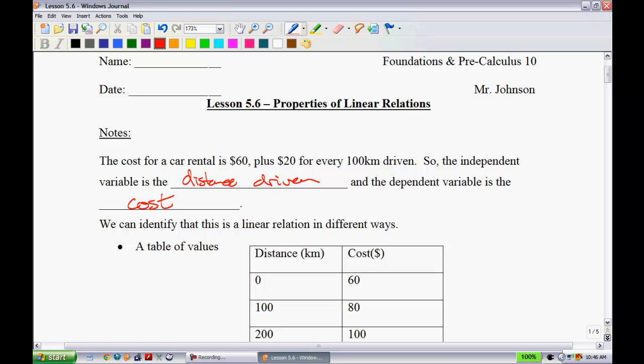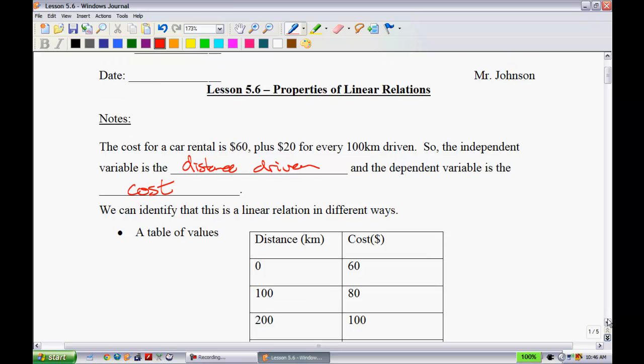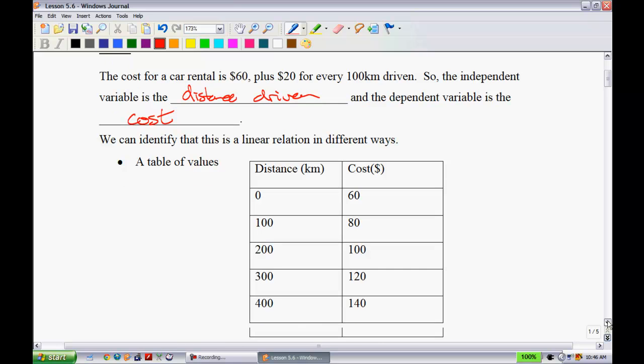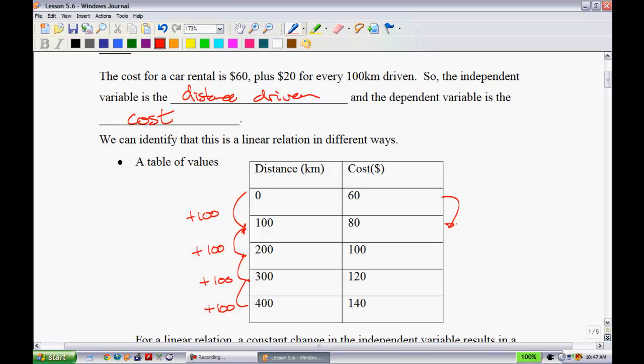We can identify this as a linear relation in a number of different ways. The first way is using a table of values. You can do this by looking at how much they go up by in terms of distance and cost. In this table, notice that on the left hand side, every time it's going up by 100. If this is going up by 100 every time, and we see it's also going up by a similar amount on the other side, then we know it must be linear. On the other side, every single time it's going up by 20, so that makes it a linear relation.